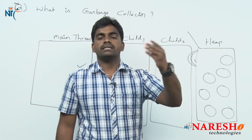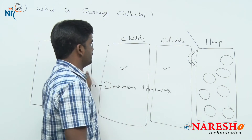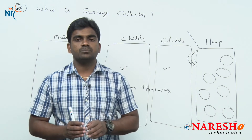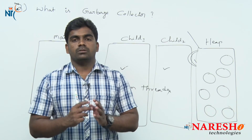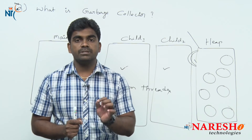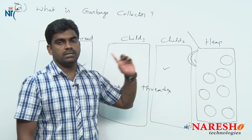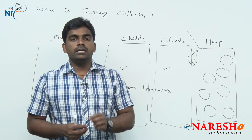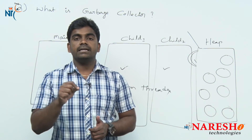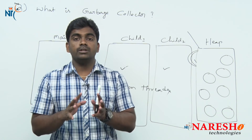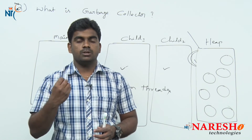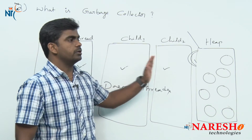The reclaimed space is made available for the next object created by the threads in the Java application. Simply put, the garbage collector thread is a daemon thread that deletes unused objects in the heap memory and recollects that heap space so new objects can be created by all the non-daemon threads.